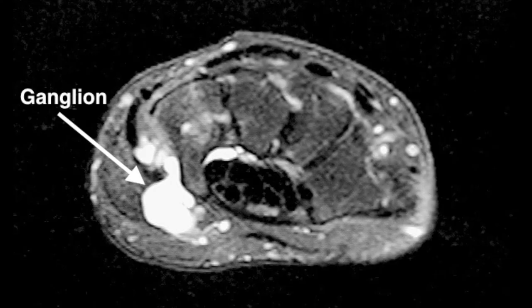MRI can also identify and localize ganglion cysts. At the arrow, a ganglion cyst in Guyon's canal is adjacent to the hook of the hamate. In this location, the cyst can compress the ulnar nerve.